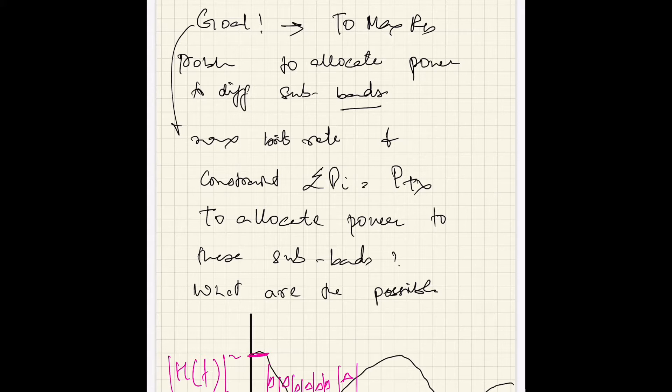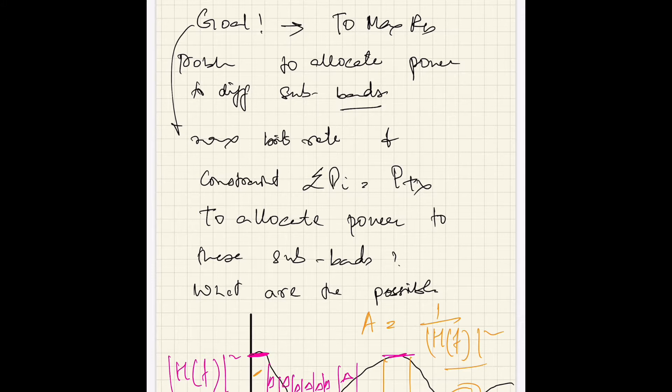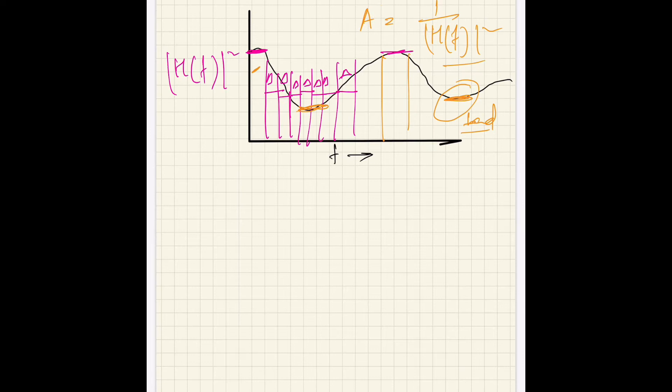Here the channel is good, here the channel is bad. The attenuation is 1 over |H(f)|². So if we focus on one sub-band that is really good and another that is bad, we might not want to use the bad one, or we might want to transmit more power on the good one. So how should we transfer our power to these sub-bands? What are the possible strategies?